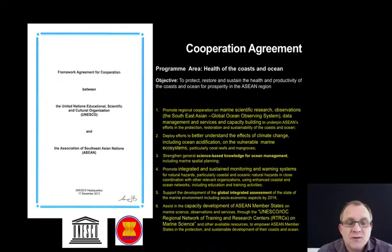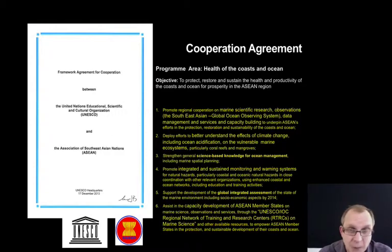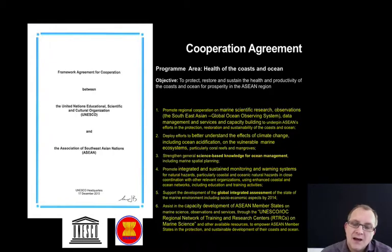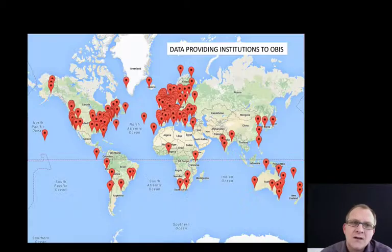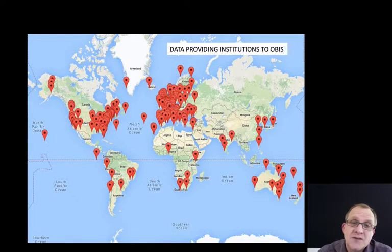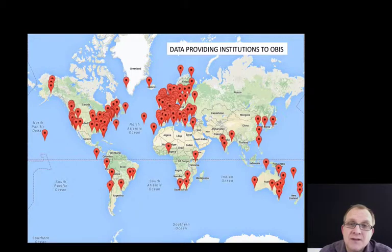I'd like to mention the cooperation agreement between UNESCO and the Association of Southeast Asian Nations in the area of health of the coasts and oceans. I think this is an important framework in which we could establish a closer collaboration between Asia and OBIS, although we already have a good relationship with the Biodiversity Center which is hosting the Southeast Asia OBIS node. However, it would be good to increase collaboration within the region, as there is still a large gap in the number of institutions contributing data to OBIS from Southeast Asia.